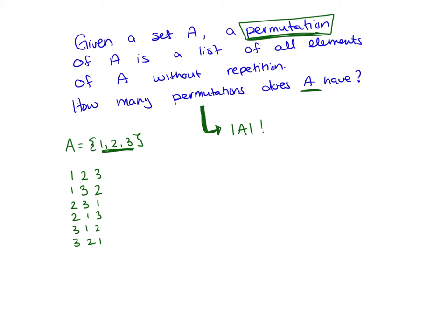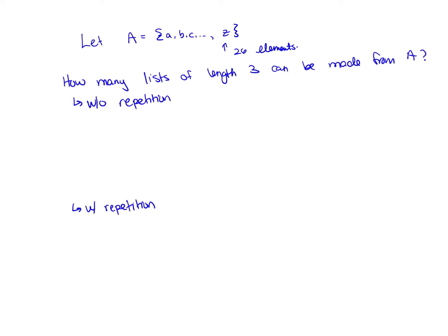So permutations are exactly what we're thinking about when we're counting these things that had factorials. So we want to think of that as our definition of a permutation. It's, you take all of the elements you have, and you just put them in all of the different orders. And we know that there's going to be n factorial total ways to do that.